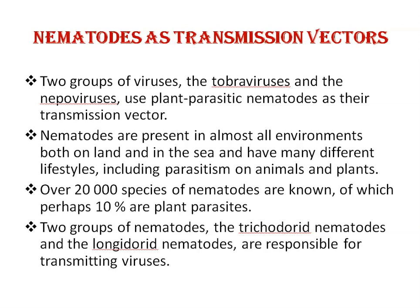Nematodes as transmission vectors: two groups of viruses, Tobraviruses and Nepoviruses, use plant-parasitic nematodes as their transmission vector. Nematodes are present in almost all environments, both on land and in the sea, and have many different lifestyles including parasitism on animals and plants. Over 20,000 species of nematodes are known, of which approximately 10% are plant parasites. Only two groups — Trichodorate nematodes and Longidorate nematodes — are responsible for transmitting viruses in plants.